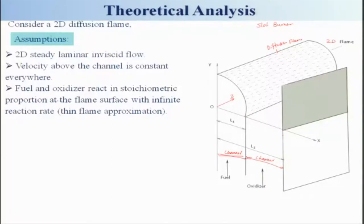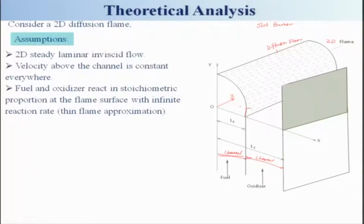That means the reaction rate will be very, very fast. At the flame surface, if oxidizer is coming through, it would not cross the flame surface — no oxygen will be found on the fuel side, and no fuel will be found on the oxidizer side. So at the flame surface: Yf = 0 and Y_oxidizer = 0. That is what we call the thin flame approximation.